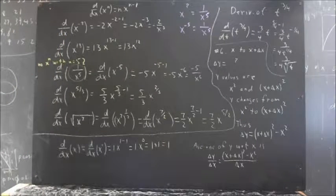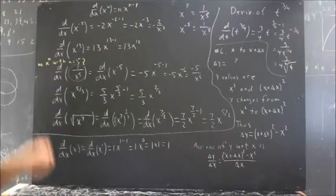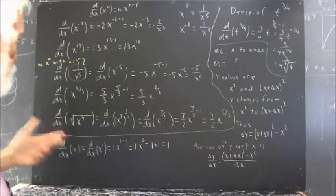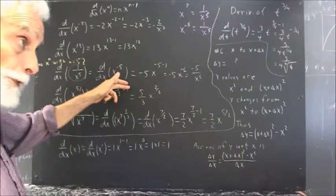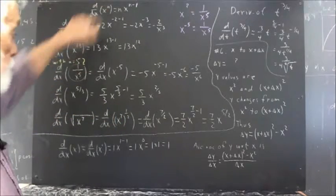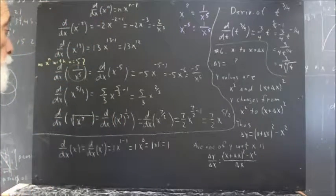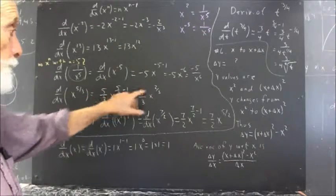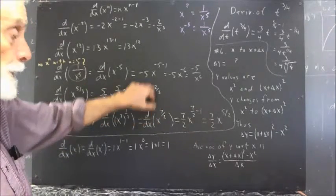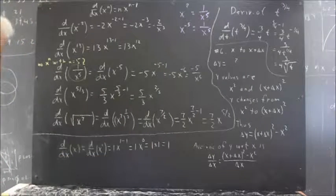Now what about the derivative of x to the 5 thirds? We're going to get 5 thirds x to the 5 thirds minus 1, because this is x to the n with n equal to 5 thirds. And of course 5 thirds minus 1 is 2 thirds, so we get 5 thirds x to the 2 thirds. Very straightforward application.